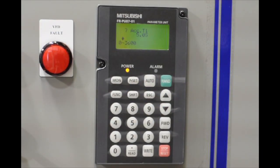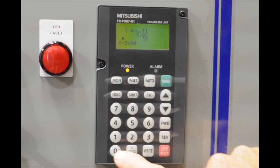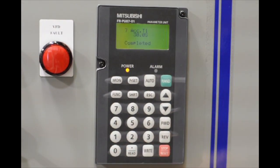Parameter seven is our accel time. The drive comes standard with five seconds, but typically, we like to put in something around 30 seconds if the equipment allows. So we're going to go ahead and type in 30, and hit write.